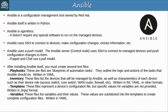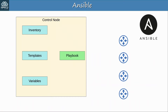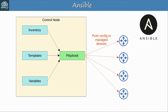Here's a diagram to visualize how Ansible works. The inventory provides a list of devices, the template files provide configuration templates, and the variables provide specific variables and their values. These inputs are given to the playbook, which takes the necessary actions to push the config to the managed devices. To summarize Ansible: it is agentless, written in Python, uses a push model, uses SSH to connect to devices, and uses YAML for its necessary files.